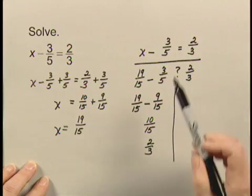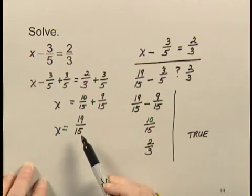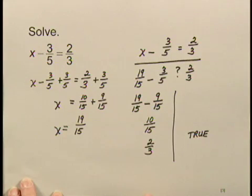So, since 2 thirds equals 2 thirds is true, we can say that 19 fifteenths is the solution of the equation.